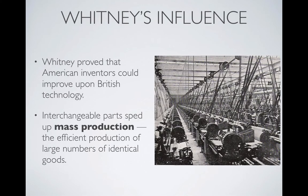Whitney's influence proved to American inventors that they could take British ideas and improve upon them. This idea of interchangeable parts led to the idea of mass production — the efficient production of large numbers of identical goods. Instead of one person in a shop making one item at a time, you build a factory where dozens or hundreds of people work together using interchangeable parts to mass-produce items. That makes them cheaper and you get far more of them. This is what leads to the Industrial Revolution in the United States.